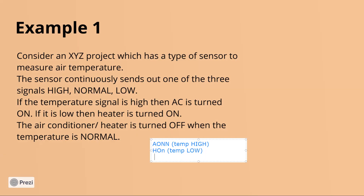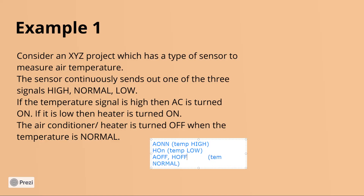When the temperature is normal, you do not turn on the AC or the heater — meaning in this condition both the AC and heater are off. So: when temperature is high, AC is on and heater is off; when temperature is low, heater is on and AC is off; when temperature is normal, both are off.